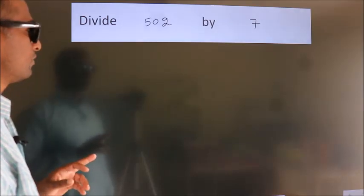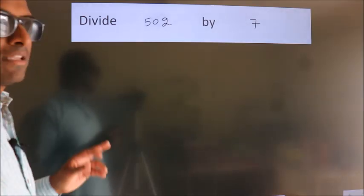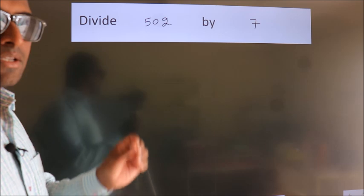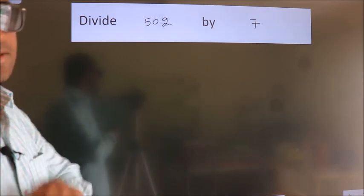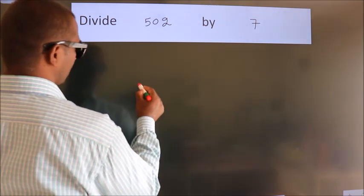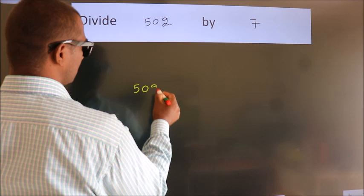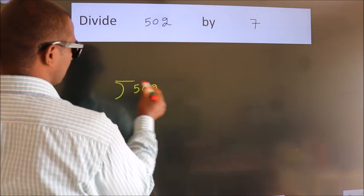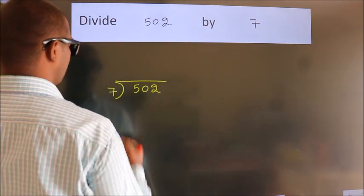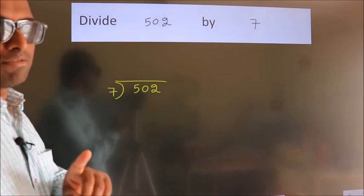Divide 502 by 7. To do this division, we should frame it in this way. 502 here, 7 here. This is your step 1.